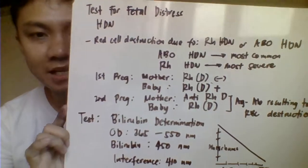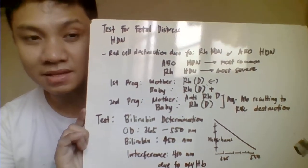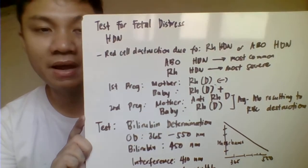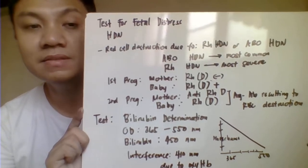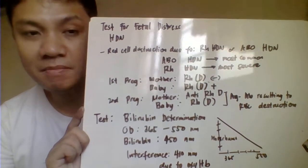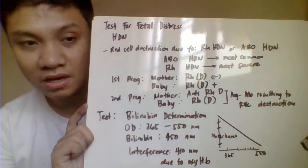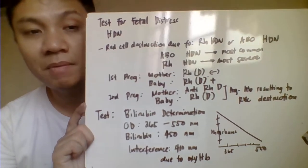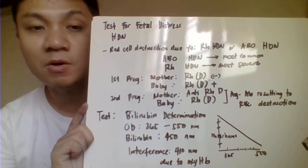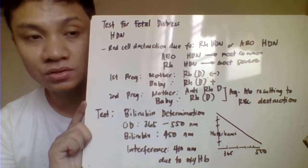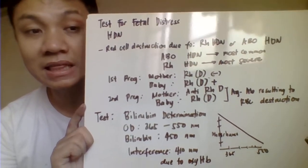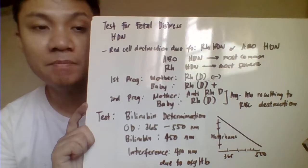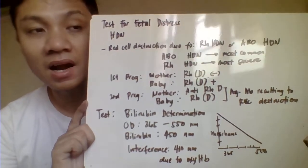Now we go to the test for fetal distress. Fetal distress is the stress of the baby, so it's not normal. There are reasons for fetal distress. The first one is HDN or hemolytic disease of the newborn, which may be related to ABO incompatibility or Rh blood group incompatibility — where the mother and the baby are not compatible with their ABO or Rh blood group. Between the two, ABO is the most common type of HDN.